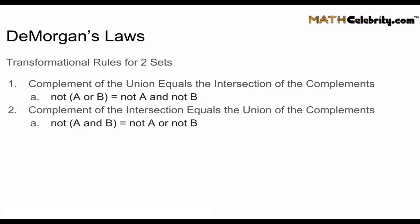The first is: the complement of the union equals the intersection of the complements. In plain English, that's: not A or B equals not A and not B. The second DeMorgan's Law is: the complement of the intersection equals the union of the complements, or in plain English: not A and B equals not A or not B.